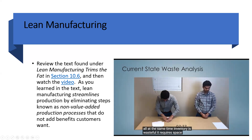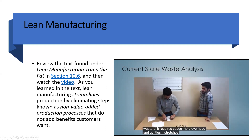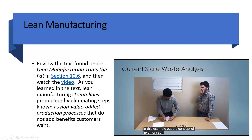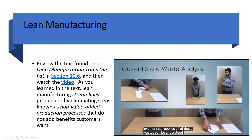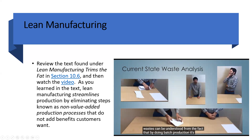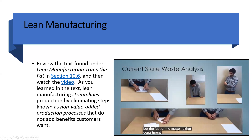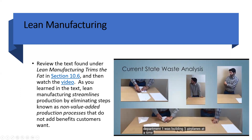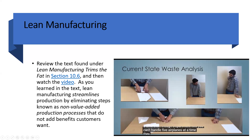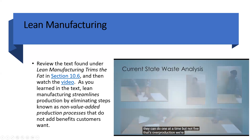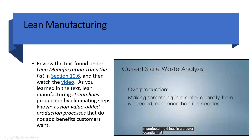Another waste was inventory. Imagine if these were full-scale airplanes — we'd have to have space to stage five airplanes all at the same time. Inventory is wasteful: it requires space, more overhead and utilities, and it stretches everything out so it takes more time to find what you need. All of these wastes stem from batch production, which is actually overproduction. Department one was building five airplanes at a time, even though department two can only handle one at a time. That's overproduction — manufacturing things in greater quantity than needed by the next customer, or earlier than needed — and it results in a multiplication of all the other wastes.